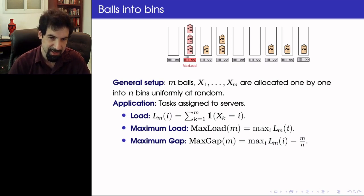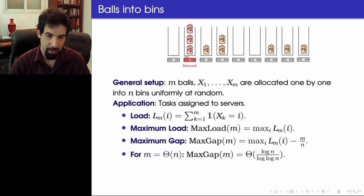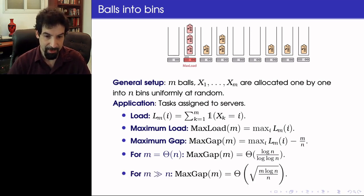In the context of tasks being assigned to servers, we would like this to be as low as possible. Probabilistic computation tells us that for M which is of order N, this maximum gap is of order log N over log log N with high probability. A different setting is when M, the number of tasks, is much larger than N, the number of servers, in which case the maximum gap could be estimated using the deviation of the normal distribution via the central limit theorem, in which case it is of order square root M log N over N with high probability.